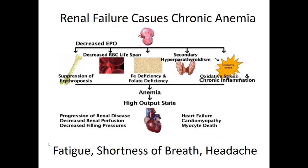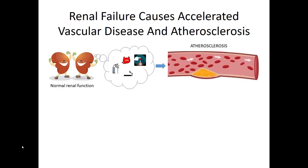Not only does renal failure affect red blood cell lifespan, but there's also iron deficiency, changes in calcium and vitamin D, and chronic oxidative stress from the anemia, which can lead to heart failure. All of these things have pretty profound consequences if the kidneys aren't working right. Not only can you get heart failure and anemia, but also problems with calcium and vascular disease from renal failure.